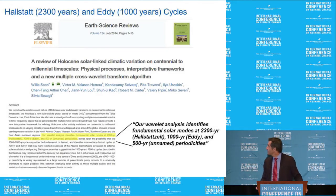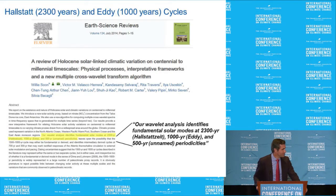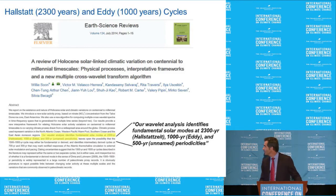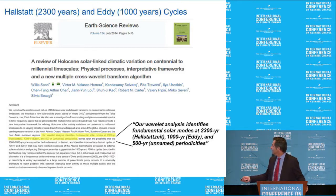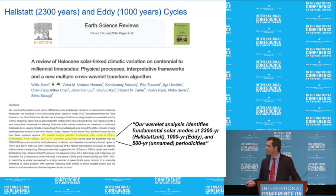Here's a very fresh paper from 2014 in Earth Science Reviews — Soon et al., 2014. One statement in the abstract is particularly interesting: the authors also found the 2,300-year Hallstatt cycle and the 1,000-year Eddy cycle. These are of great importance because we're going to see what they do to the Earth's climate.